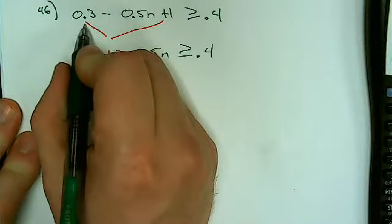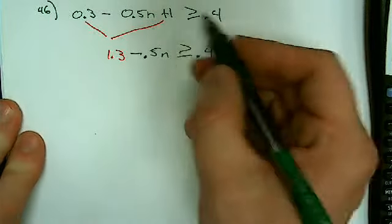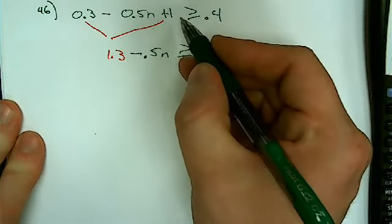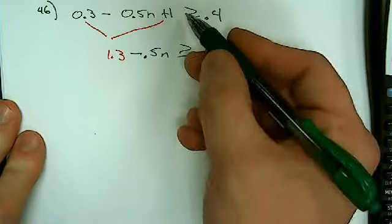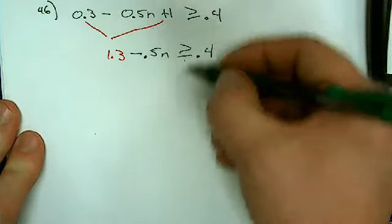I'm combining something that doesn't have a variable with something that doesn't have a variable. So this is just the number 0.3, this is just the number plus 1, and they're on the same side. Can you add the 1?